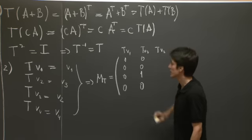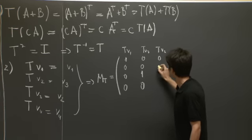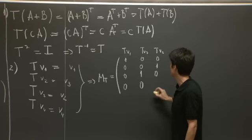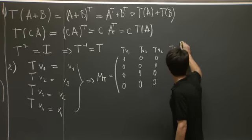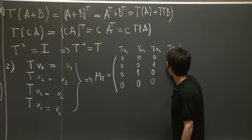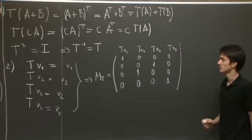T of V3 is 0 V1, 1 V2, 0 V3, 0 V4. And T of V4 is 0 V1, 0 V2, 0 V3 plus 1 V4.